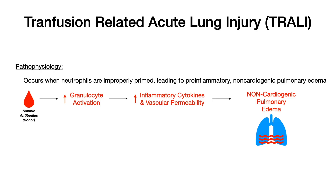In the pathophysiology of TRALI, the blood product is transfused and in that blood product there are soluble antibodies — and those antibodies are the donor's, not the recipient's. In the recipient, you get increased granulocyte activation, which leads to increased pro-inflammatory cytokines and vascular permeability, and that leads to pulmonary edema. It's not cardiogenic because it's not inherent to pulmonary venous pressure spilling over; rather, it's due to this inflammatory reaction caused by the antibodies in the donor product.